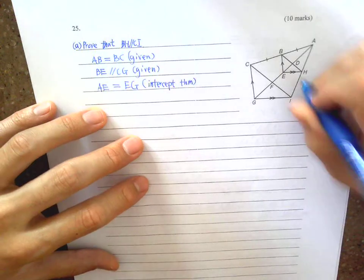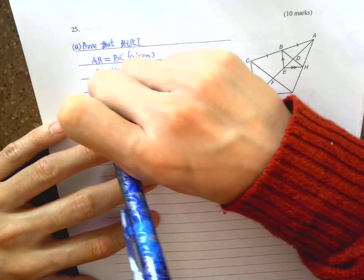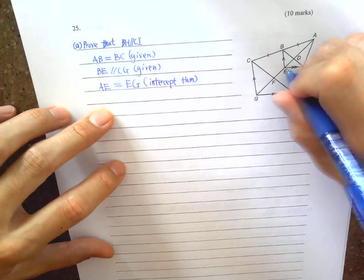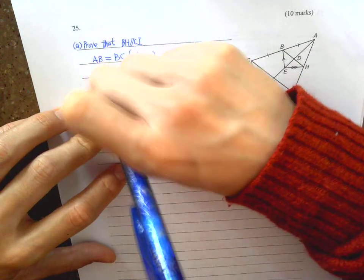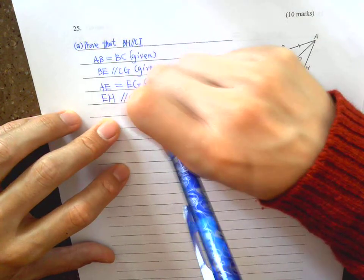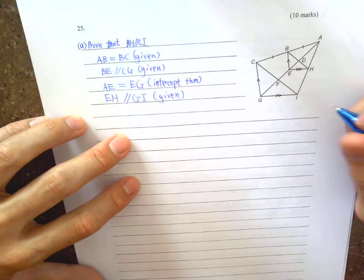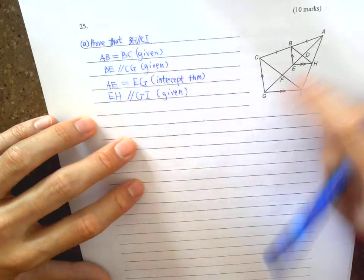So after you prove these two are equal, then you can actually consider this one and this one. We have EH parallel to GI, this is given, so what you know will be these two are equal.